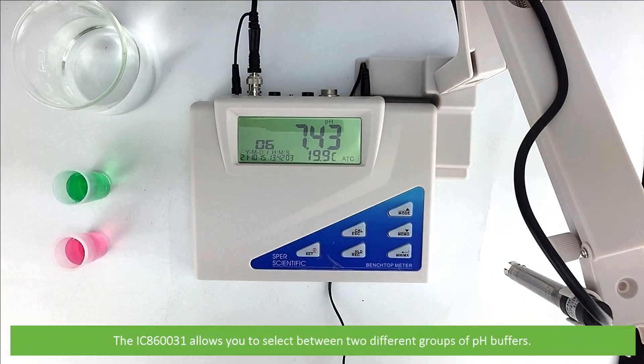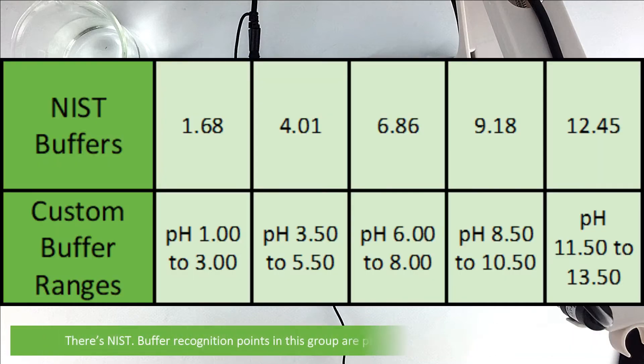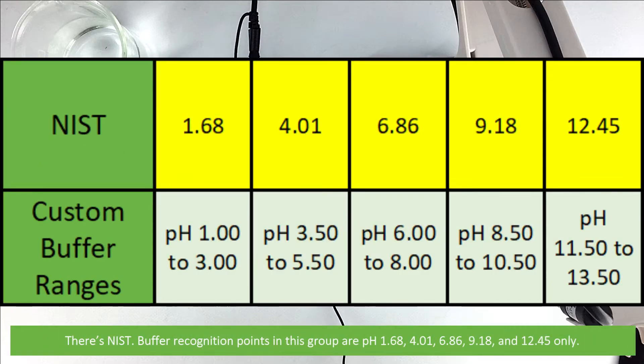The IC860031 allows you to select between two different groups of pH buffers. There's NIST. The buffer recognition points in this group are pH 1.68, 4.01, 6.86, 9.18, and 12.45 only.